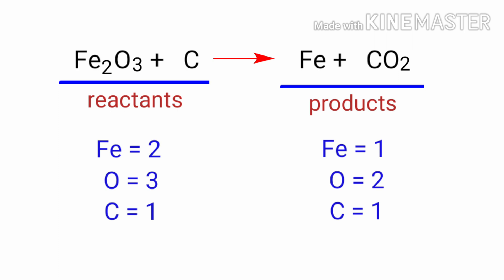To balance the chemical equation, we need to make use of coefficients. A coefficient is a number that we place in front of a chemical formula.